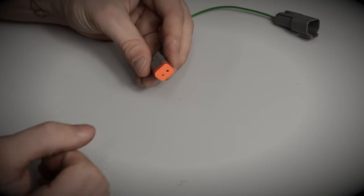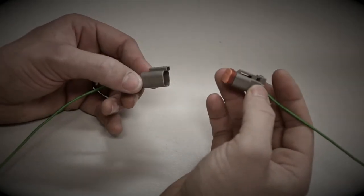Finally, ensuring the rubber seal at the front of the plug is firmly in place, the socket and plug can now be connected together.